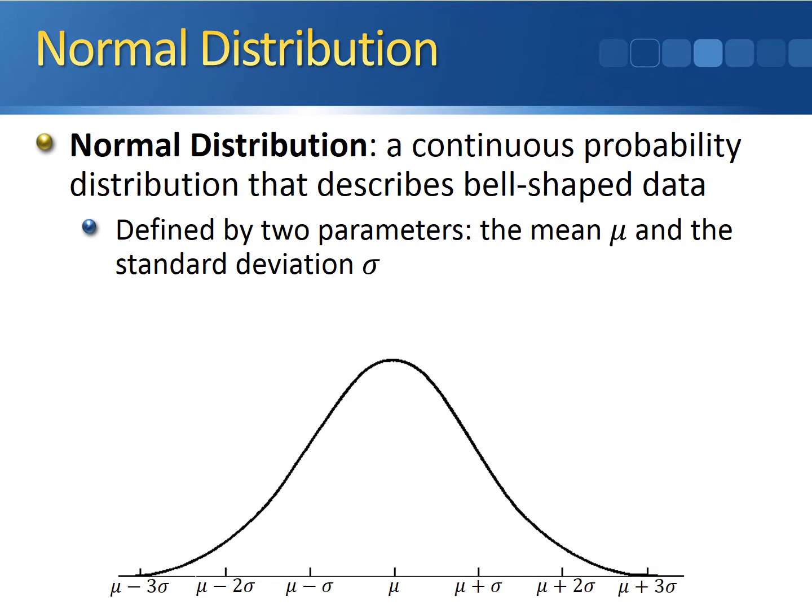The normal distribution is defined by two parameters: the mean mu, which is the population mean, and the standard deviation sigma, which is the population standard deviation. So when we're talking probability with the normal distribution, we know our two population parameters.